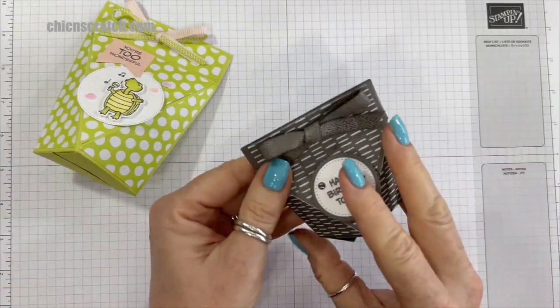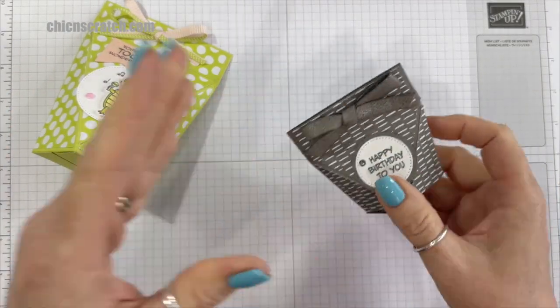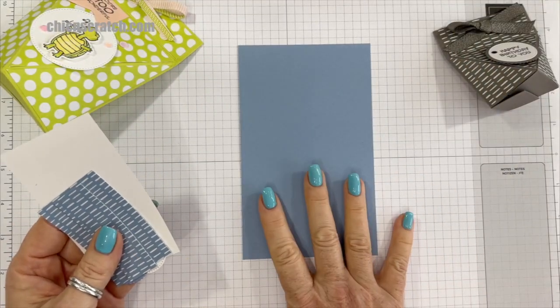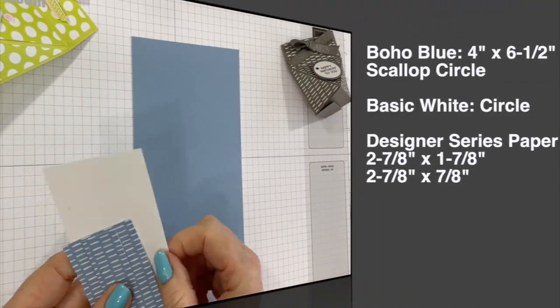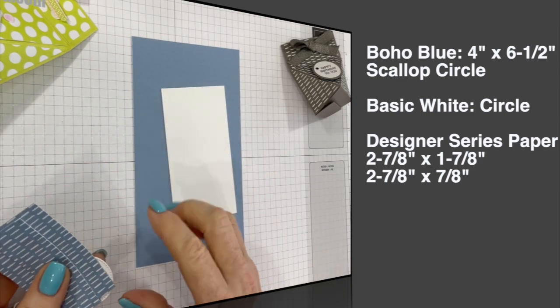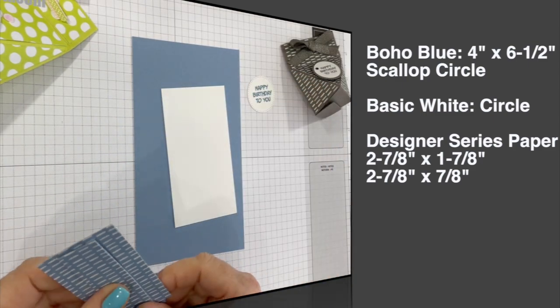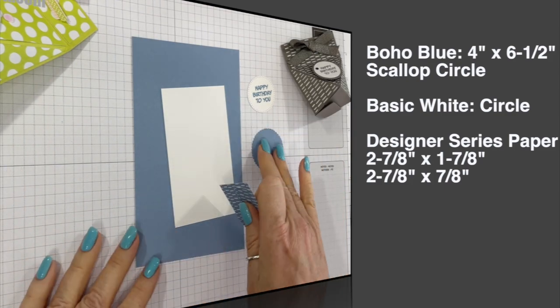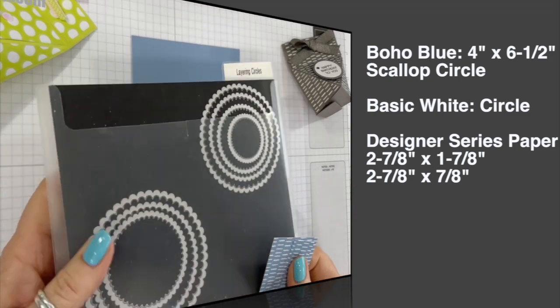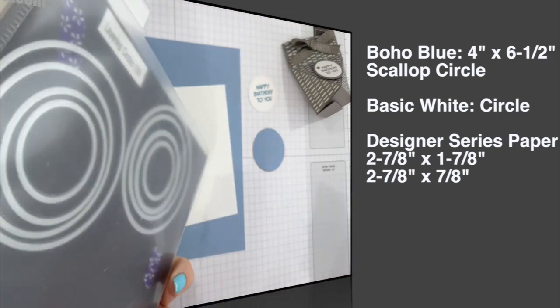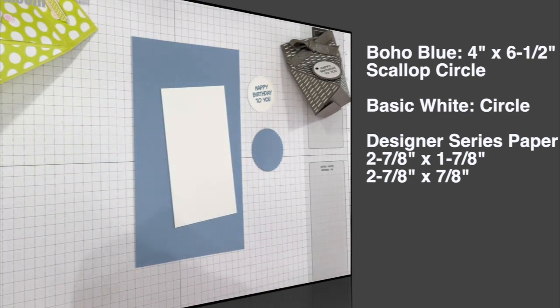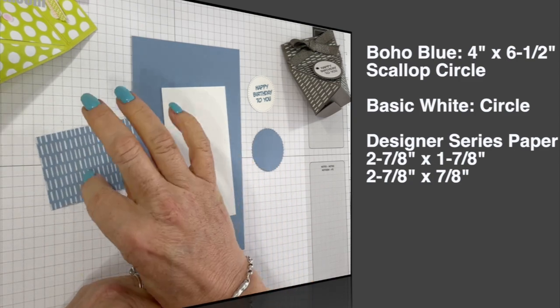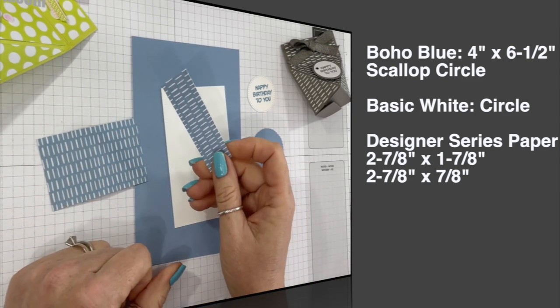Here's the supplies. This is Boho Blue cardstock and this measures four by six and a half. We've got a scrap of Basic White. I've gone ahead and stamped that image just to save some time. We've got a scallop circle here, this is from a die, a set of dies that is retiring very soon, but I'm going to keep using them.